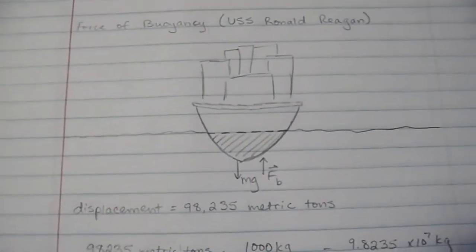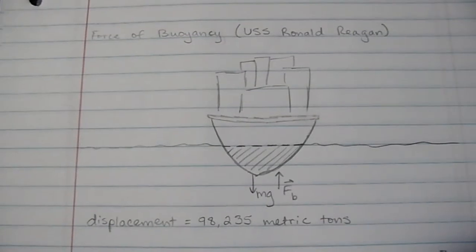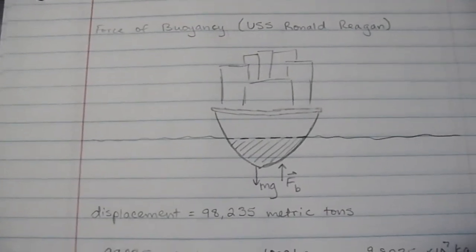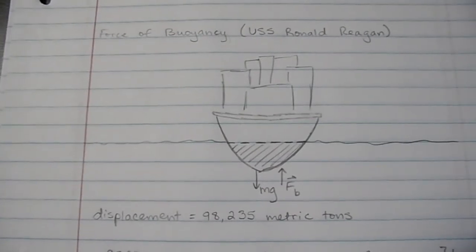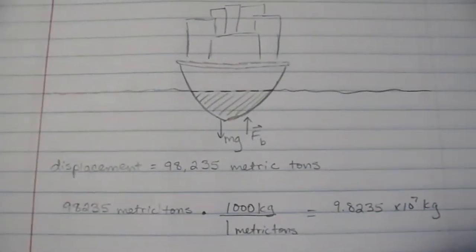The displacement for the USS Ronald Reagan is about 98,235 metric tons, and to convert this to kilograms is a pretty simple calculation.